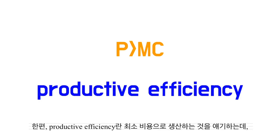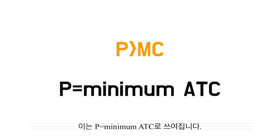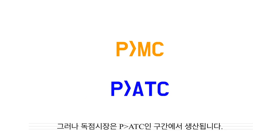Besides that, Productive Efficiency is when products are being produced at the lowest minimum cost, where P equals minimum ATC. Monopoly, however, produces where P is larger than ATC.